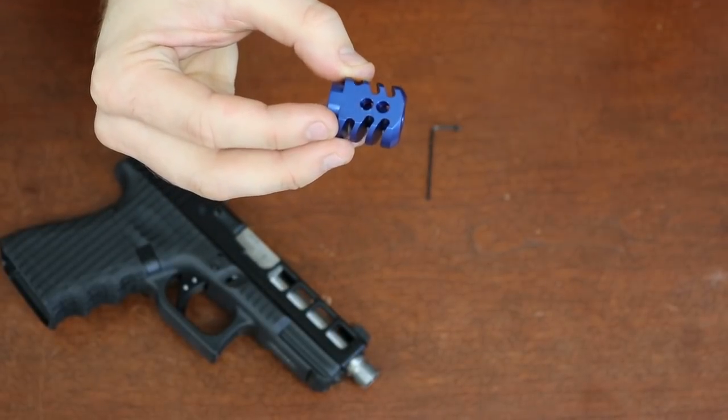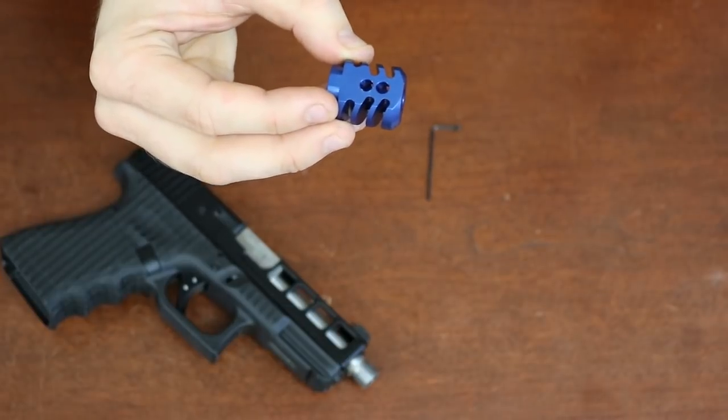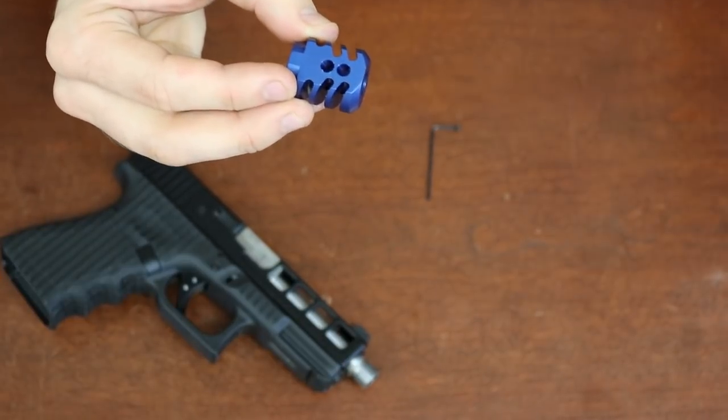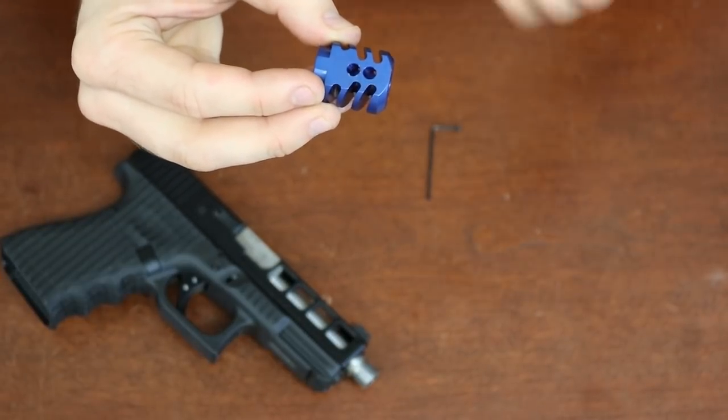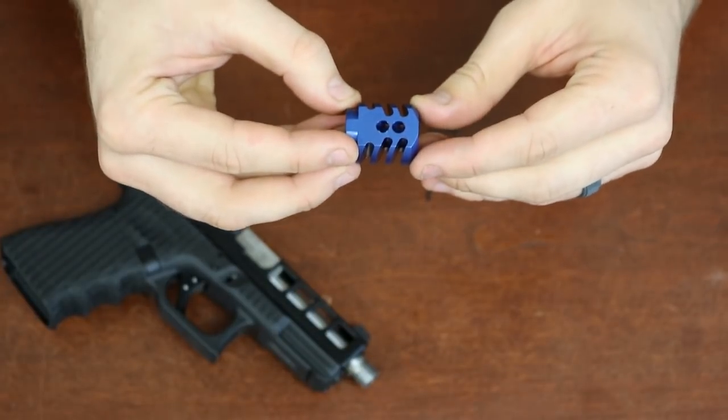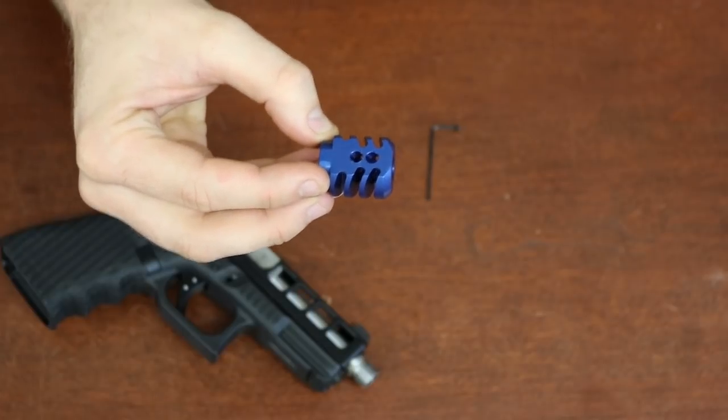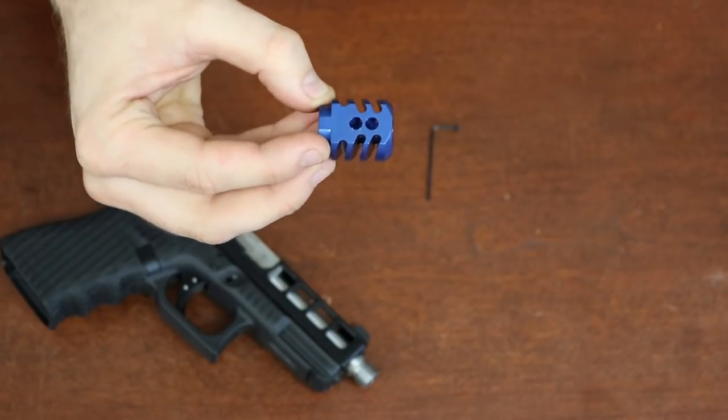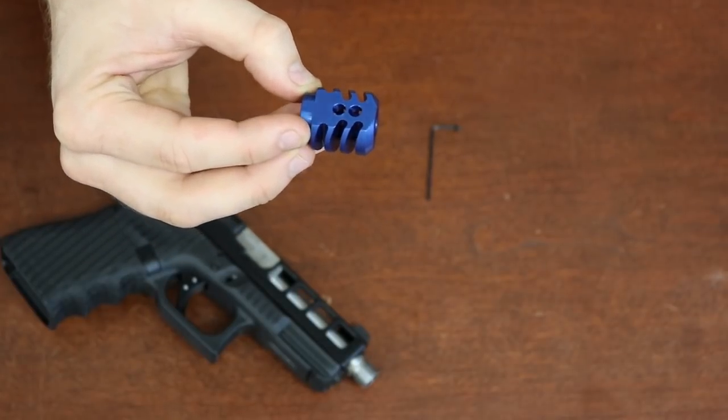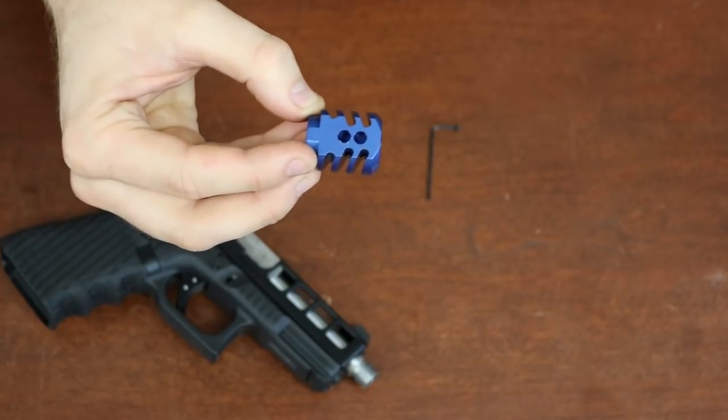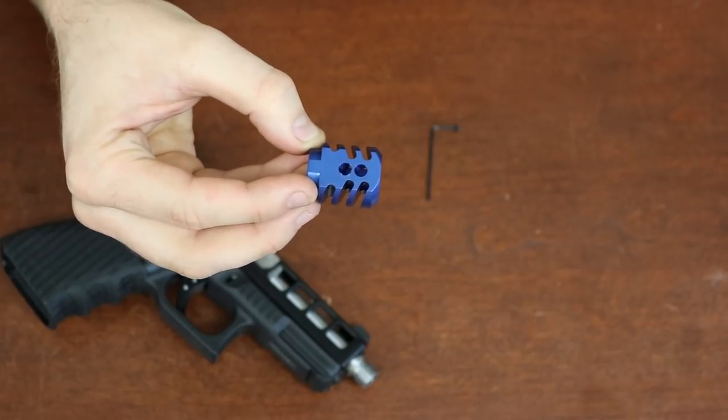The way that this is going to work is it's going to force the gases not only out the sides but also backwards. That's going to help in really mitigating the recoil and using the gases that your gun is expelling anyways to really meet the full potential of what this compensator can do.